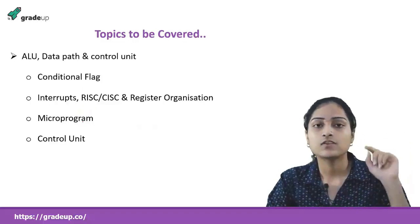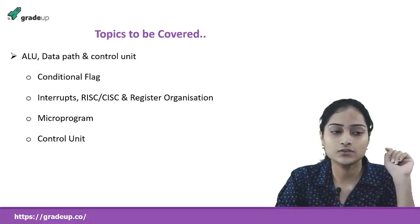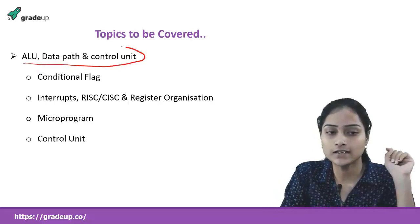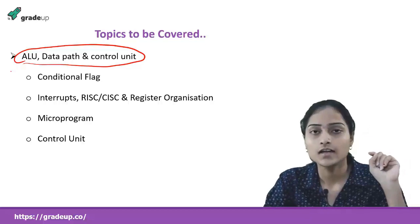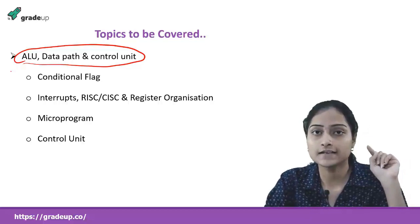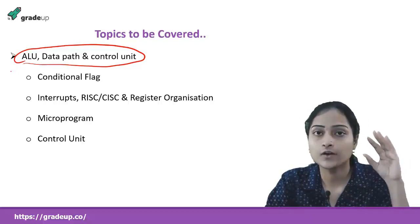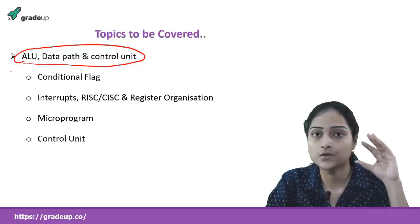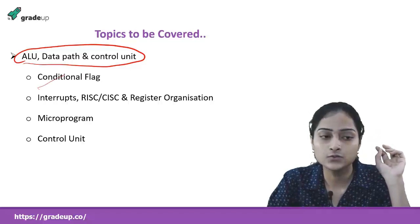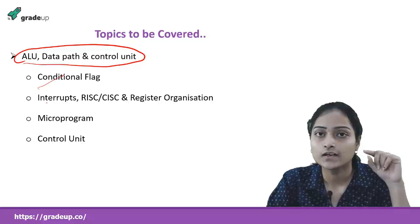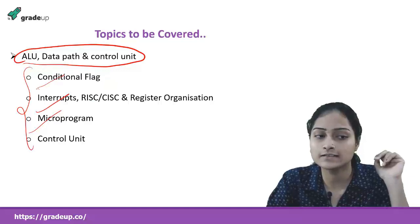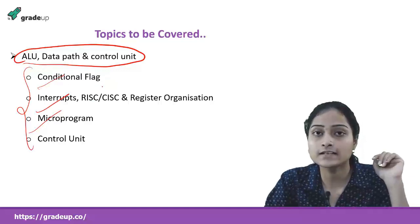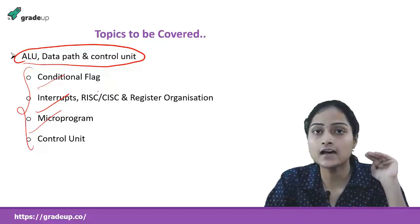Next we are going to discuss ALU, data path and control unit. Till now we discuss the basic organization of CPU; now we will discuss the parts of CPU — ALUs, control unit, data path, data lines, microprogramming, and register organization. So now we will discuss the internal things inside the CPU.